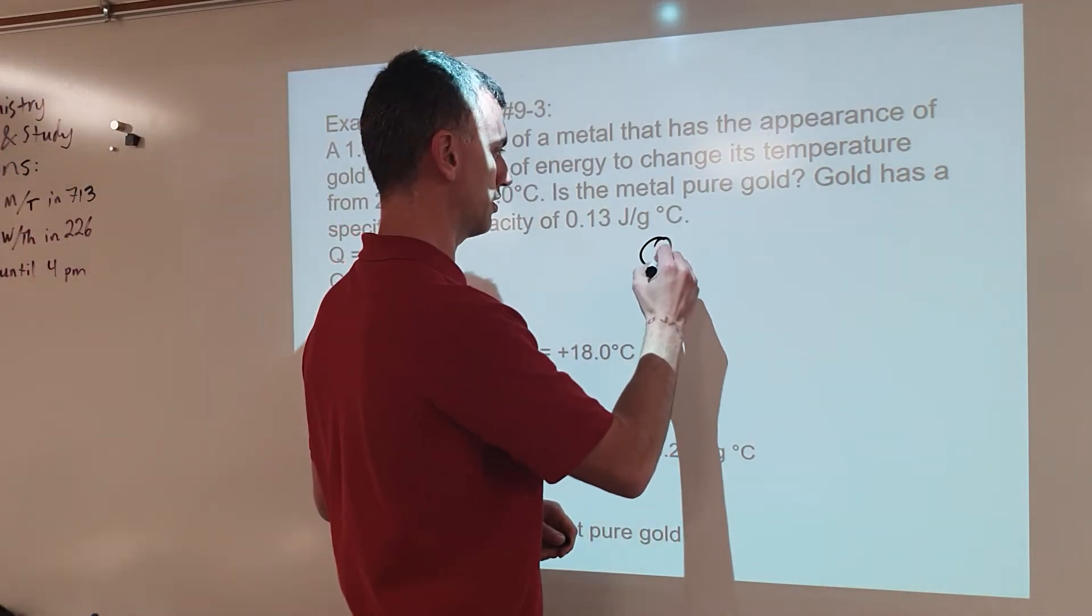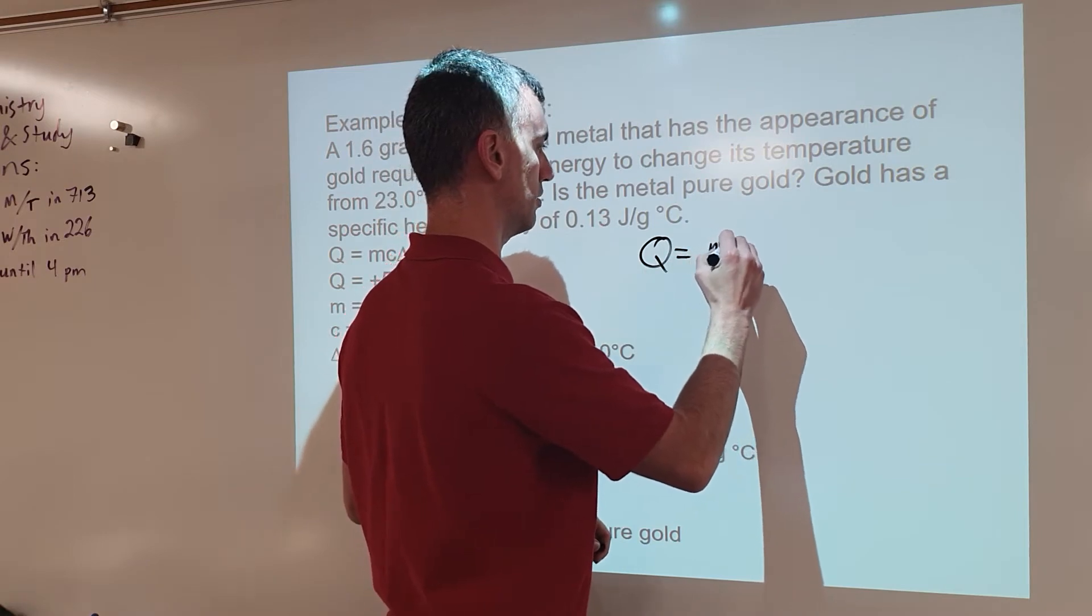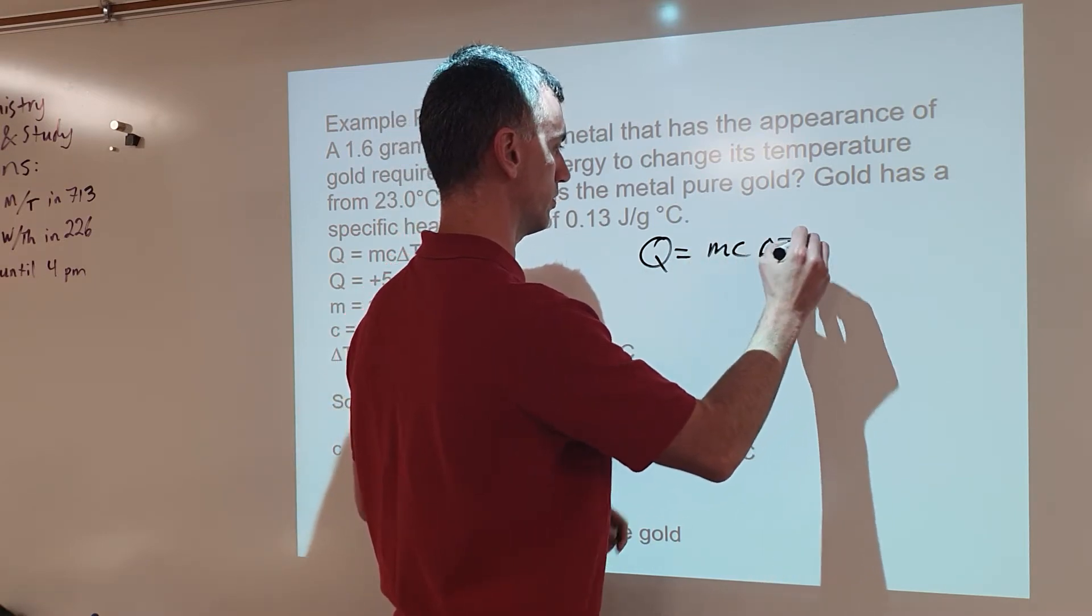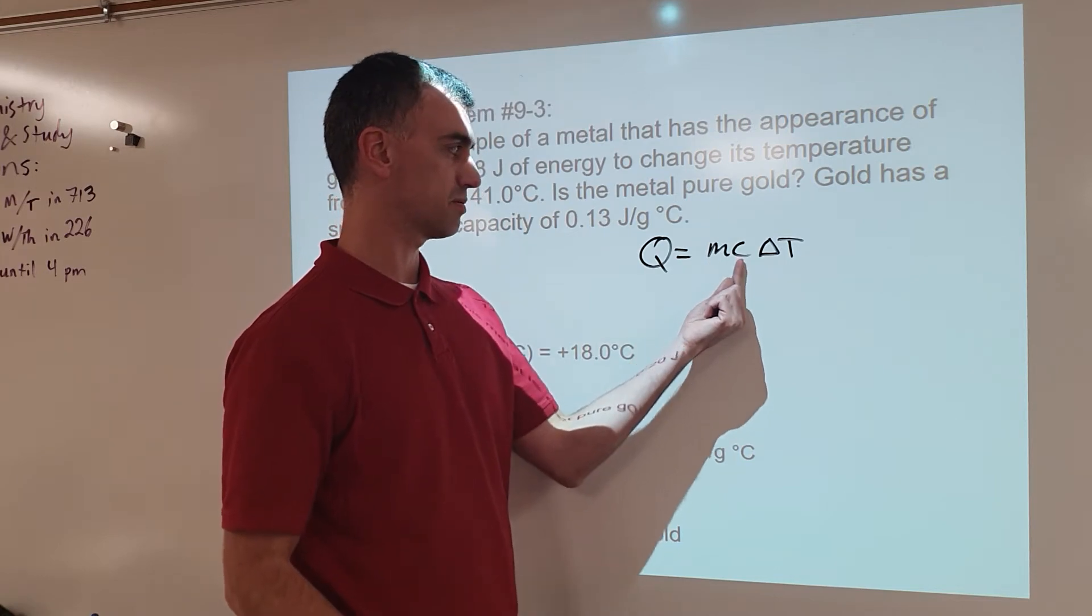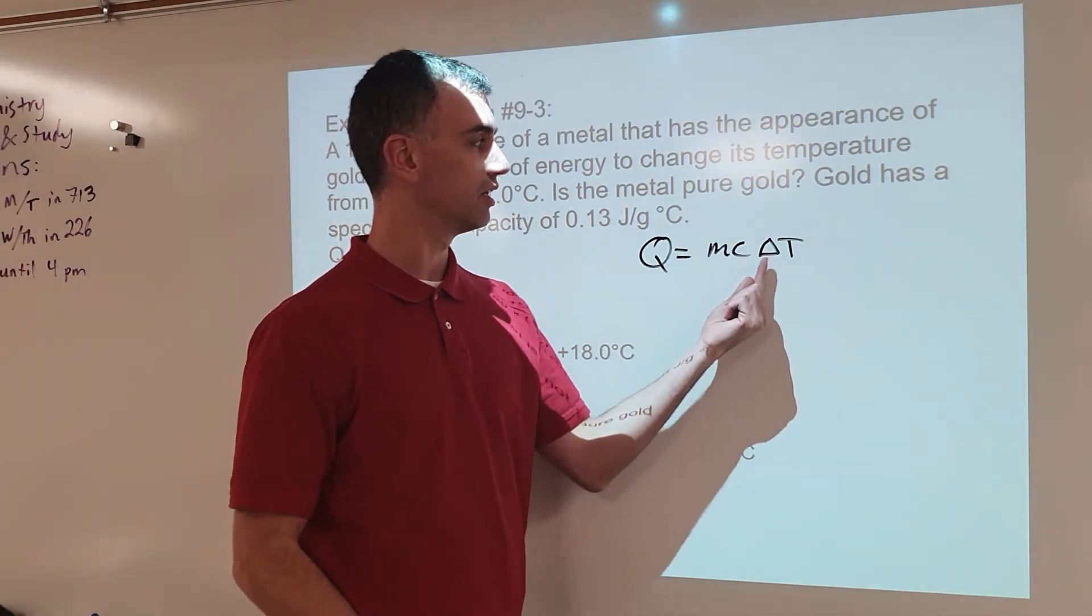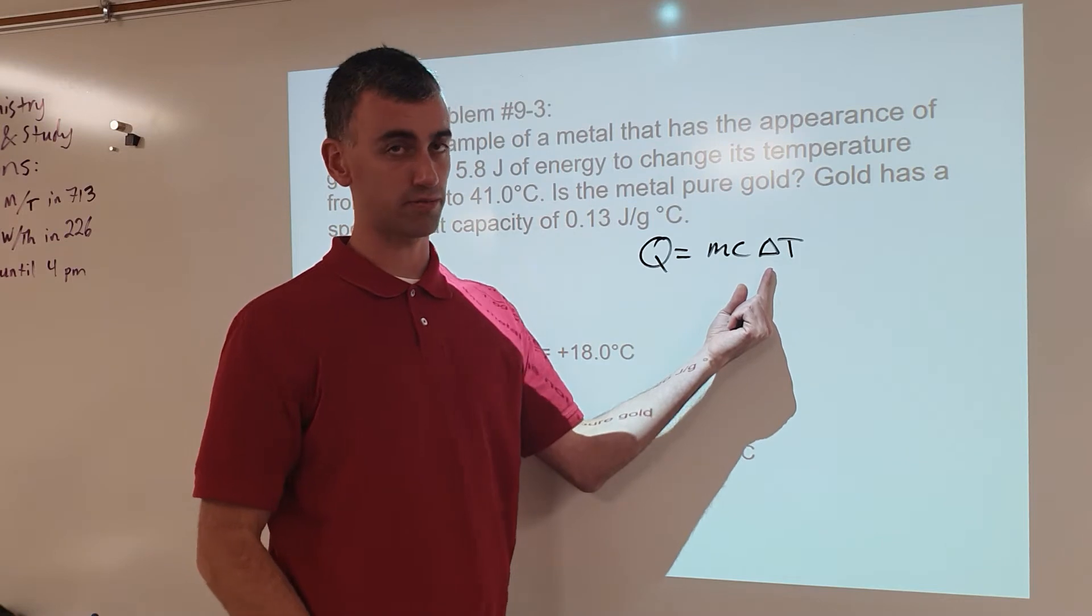So I'll rewrite the equation here. Q = mcΔT. Q for energy equals the mass of a sample times the specific heat capacity of a sample times the change in temperature for a sample.